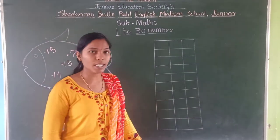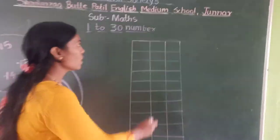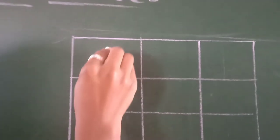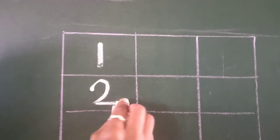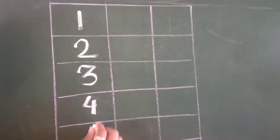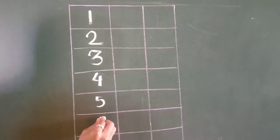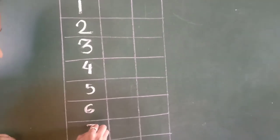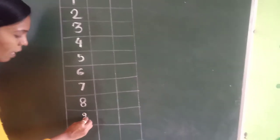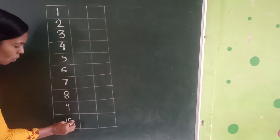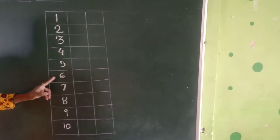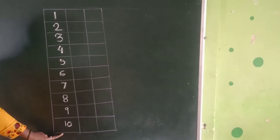So, see on the board. 1, you have to say after me. Ok students? This is number 1, then 2, 3, 4, 5, 6, 7, 8, 9, and 1, 0, 10. 1, 2, 3, 4, 5, 6, 7, 8, 9, and 1, 0, 10.